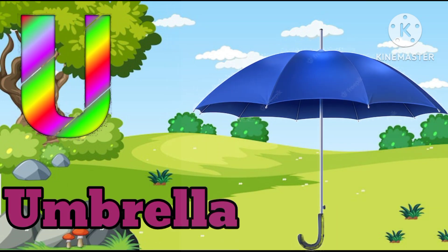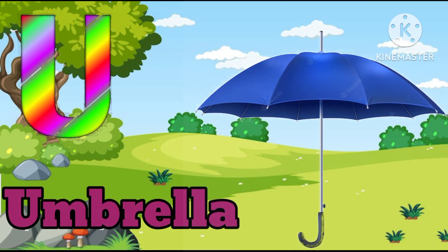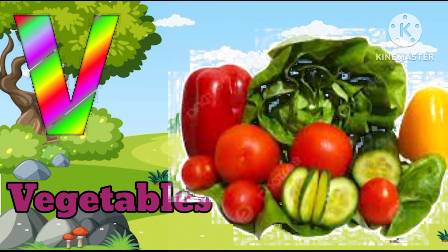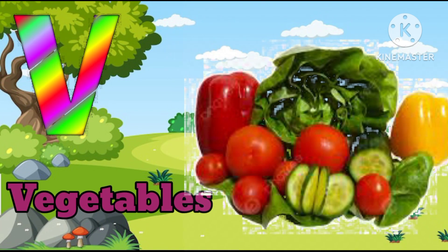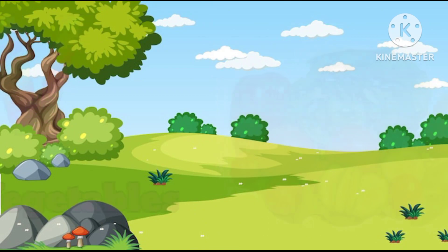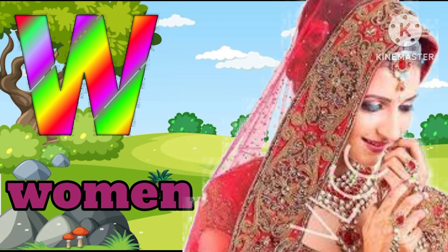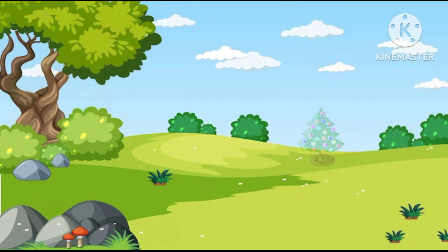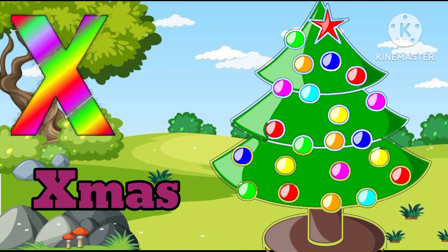U for umbrella, umbrella means chhata. V for vegetable, vegetable means shabji. W for Boman, Boman means aurat.